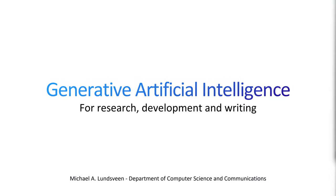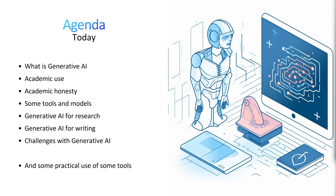We are going to look into generative artificial intelligence — tools like ChatGPT, BingChat, BardChat, and so forth — specifically for research, development, and writing of your master's thesis. Today's agenda covers what generative AI is, academic use and academic honesty, some tools and models you're free to use, generative AI for research and writing, challenges for generative AI, and throughout we'll look at some practical use of these tools.